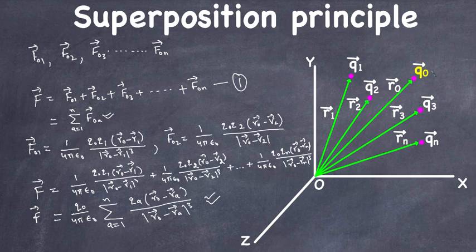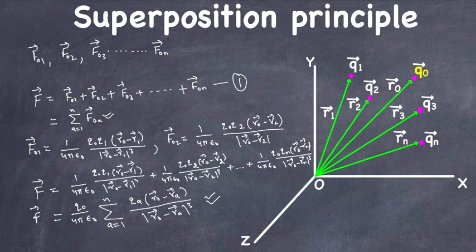That's what the superposition principle is. The force on charge Q naught is the sum of forces acting on it due to all other charges, and it is not affected by the presence of any other charge. This principle is very useful — you can apply this formula to calculate forces for a collection of point charges using Coulomb's law. Thank you for watching, please share and subscribe.